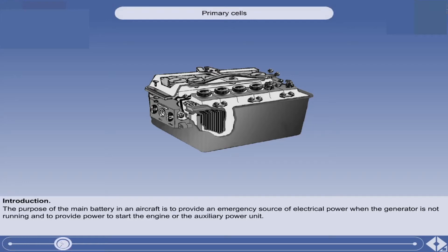The purpose of the main battery in an aircraft is to provide an emergency source of electrical power when the generator is not running and to provide power to start the engine or the auxiliary power unit.